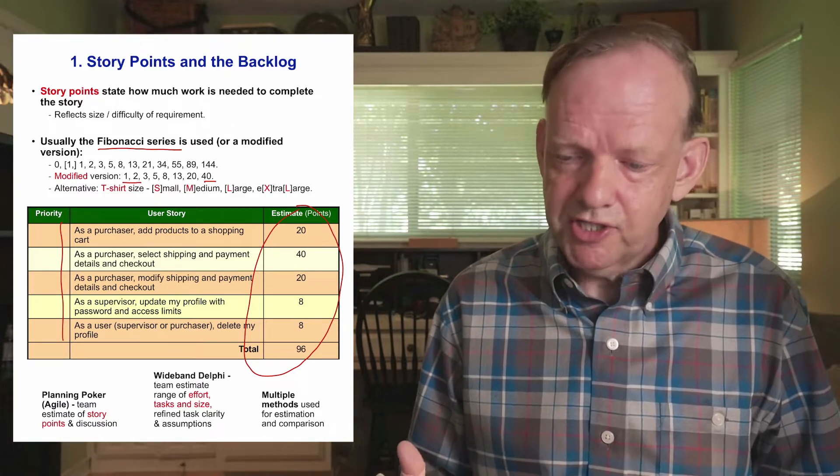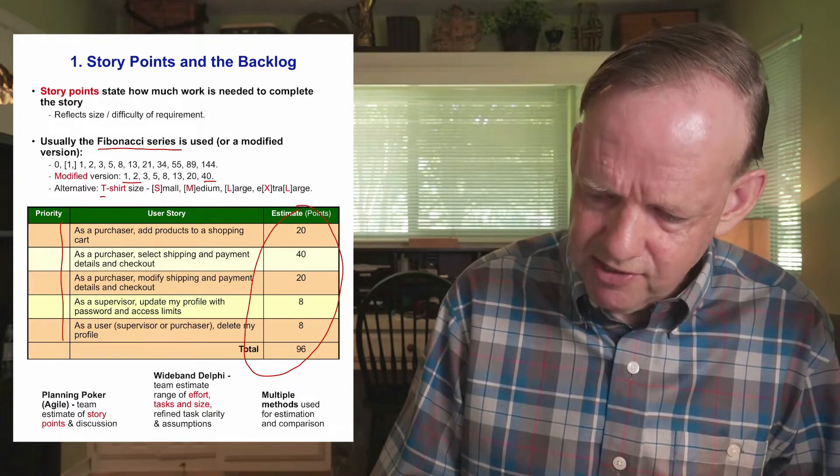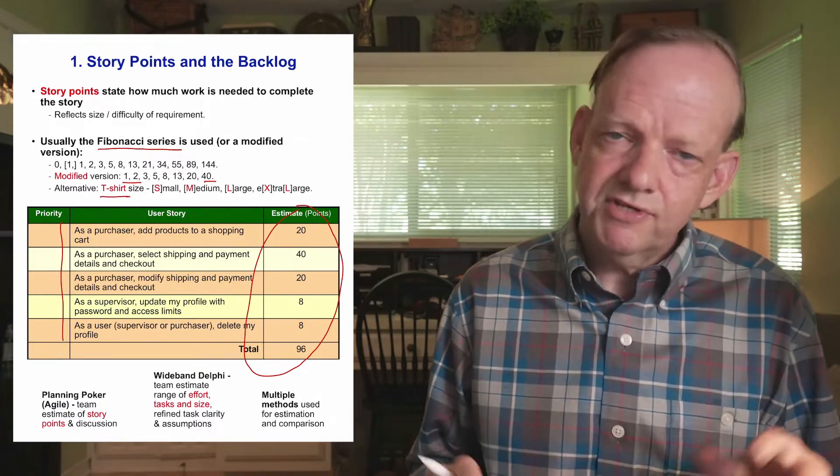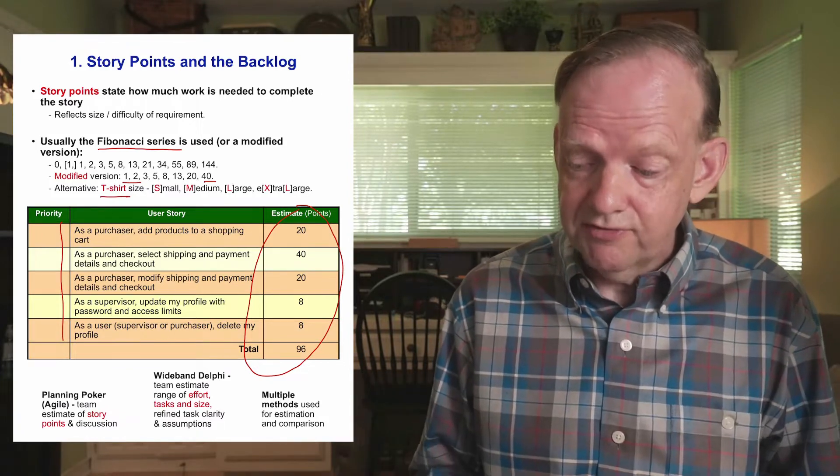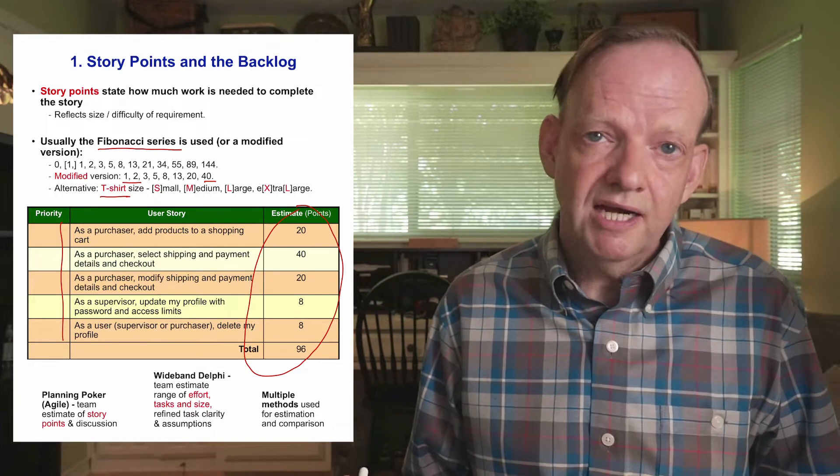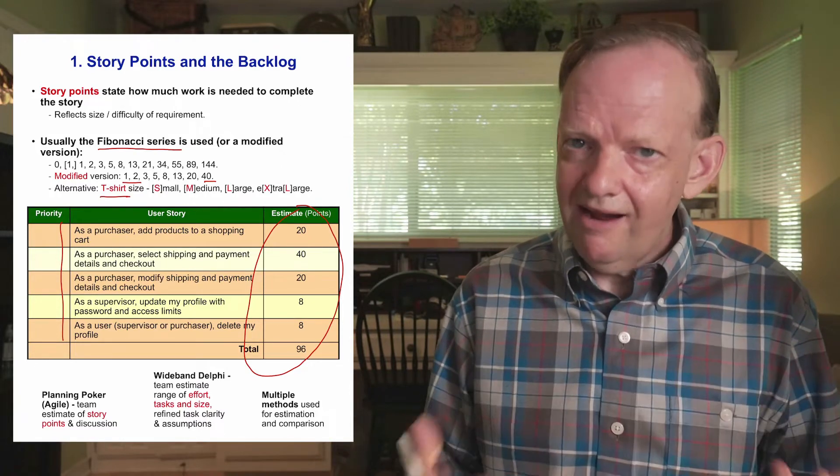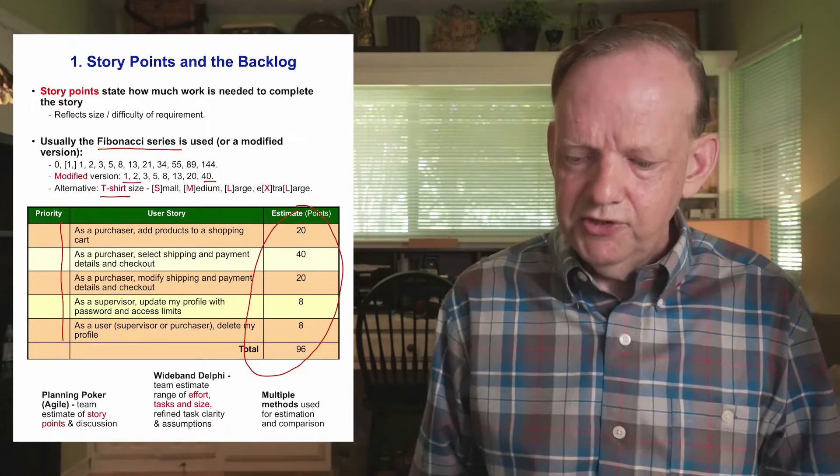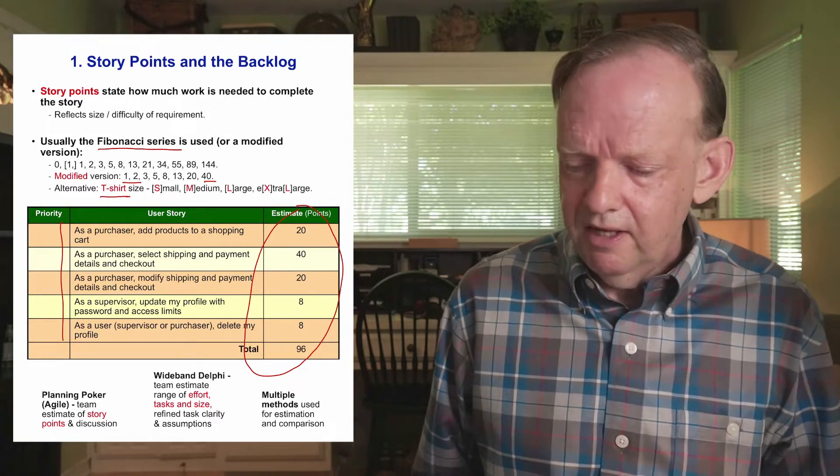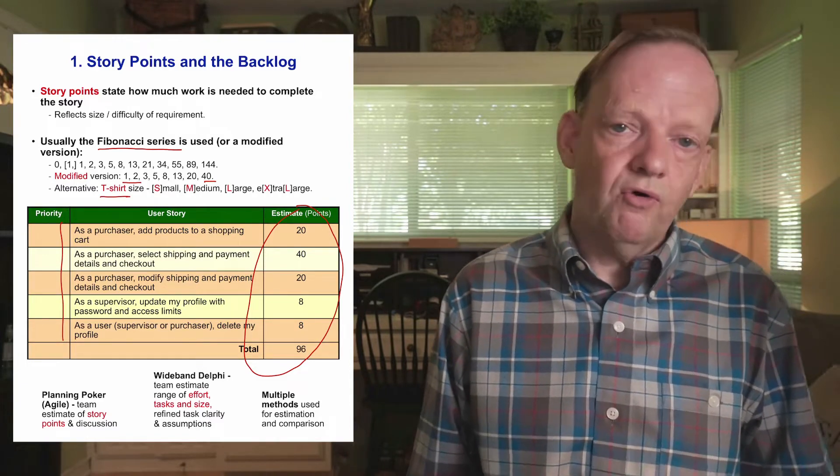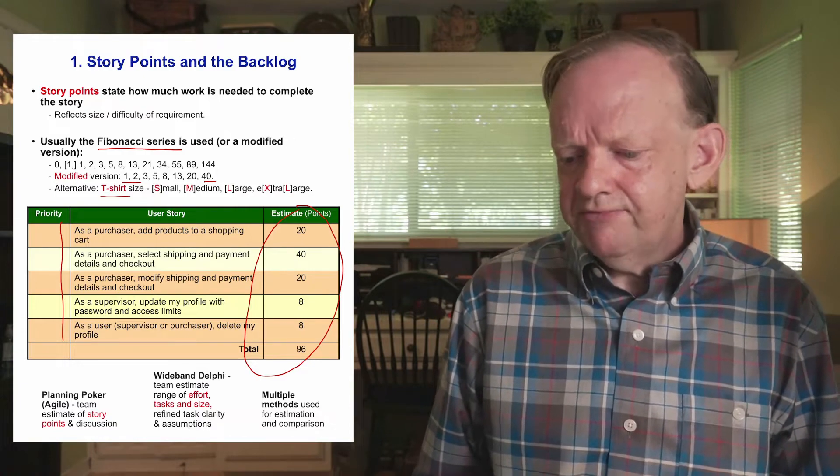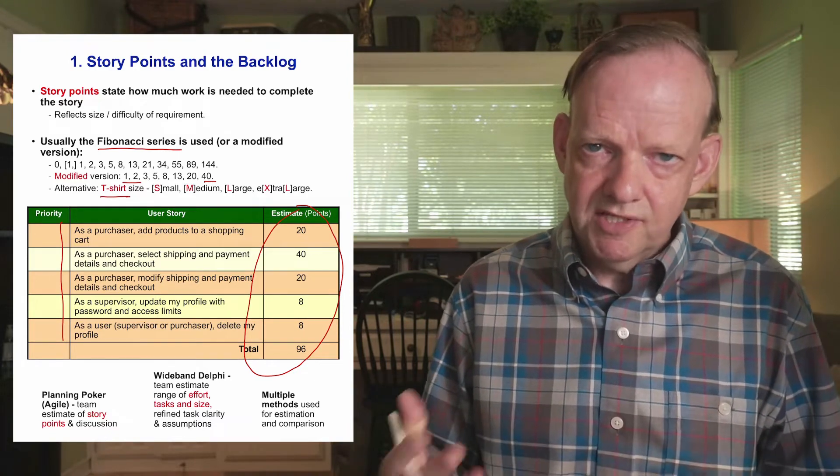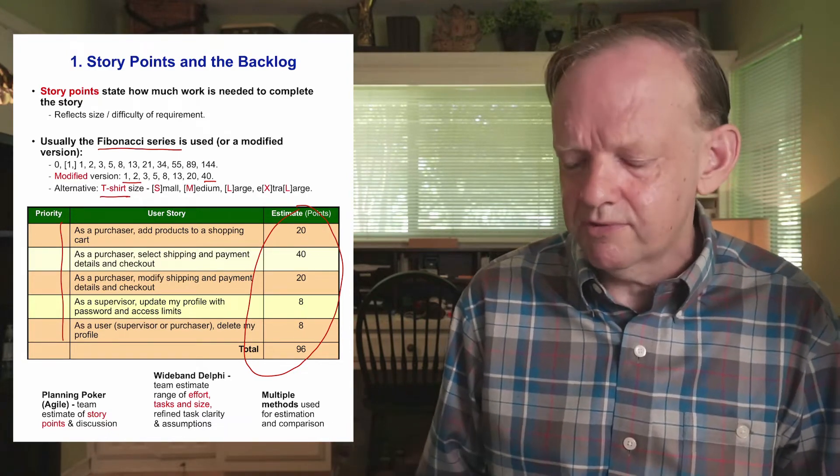Some teams don't use Fibonacci. They use an alternative, like t-shirt sizes, where they have small, medium, large and extra large. This is a relative discussion of the magnitude or size of the item on the backlog. The downside of a t-shirt size is that you really can't calculate anything with that because small doesn't mean two weeks or four weeks or ten weeks. You have to recalculate in a number system to derive effort or labor or schedule. I would at least use a number system where you can calculate velocity and other things with the numbers later on.